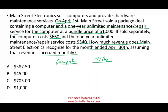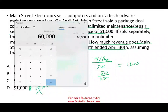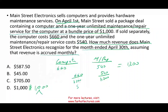We're selling one computer and one maintenance and repair service — two products that can be sold separately with two distinct prices. The computer by itself costs $660 and the maintenance and repair is $540, so together that's $1,200, but we're selling everything for $1,000. Since they can be sold separately, we must allocate the $1,000 across the two products. We take $660 divided by $1,200 and $540 divided by $1,200 to find each product's share. That gives us 55% for the computer and 45% for maintenance and repair.